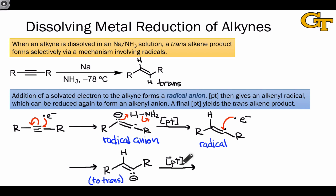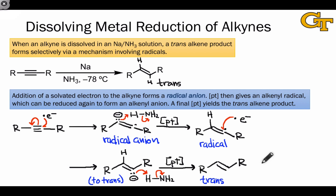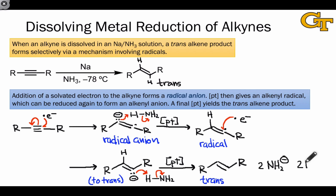The trans alkene product forms selectively after a second proton transfer event. To help appreciate this mechanism, it also helps to draw the byproducts. In the two proton transfers, we've generated two NH₂⁻ anions. To create the solvated electron intermediates that participate in the addition steps, we also needed to create two Na⁺ cations — before the alkyne was ever introduced. So in addition to the trans alkene, 2 NH₂⁻ and 2 Na⁺ are generated in the course of this reaction.